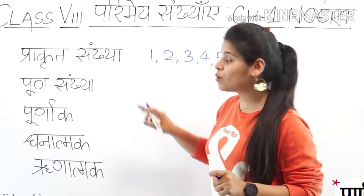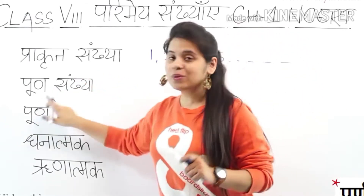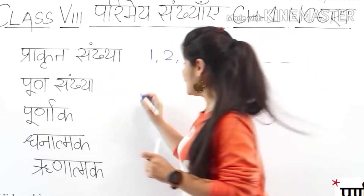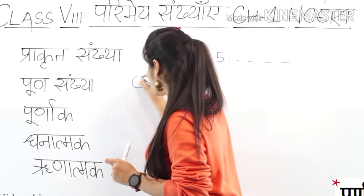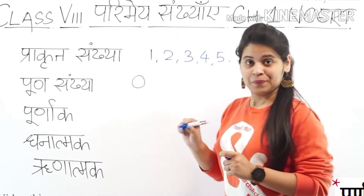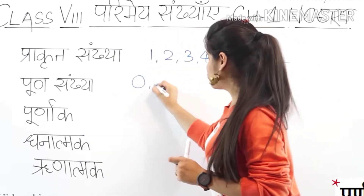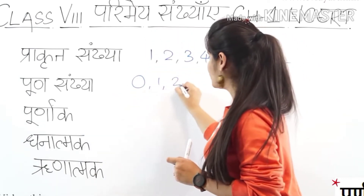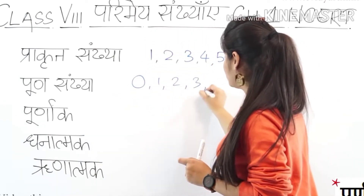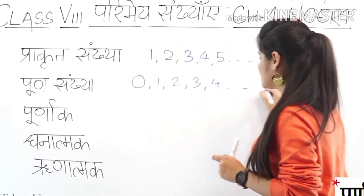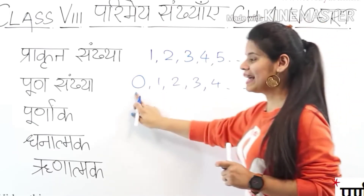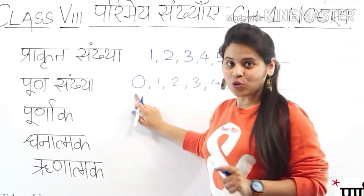The second type is Poon Sankhya — Whole Numbers. Poon Sankhya starts from zero: 0, 1, 2, 3, 4, and so on.